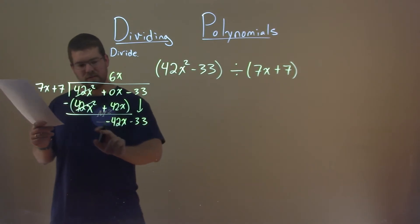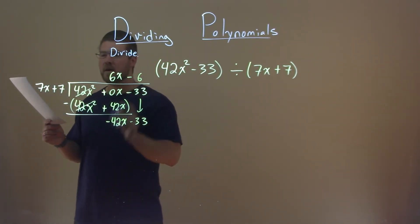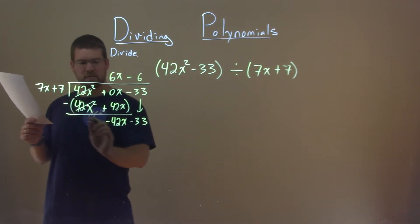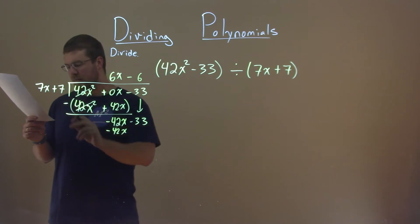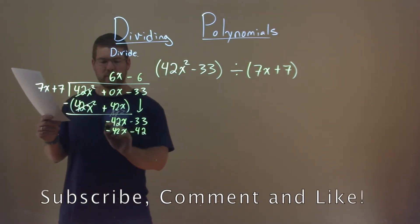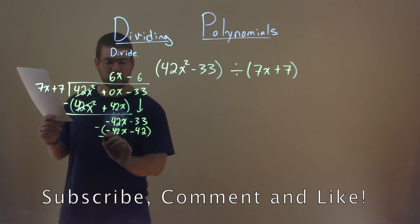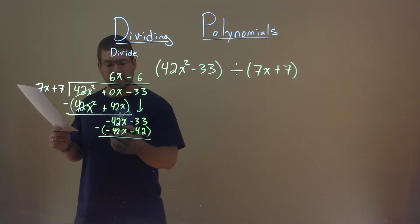What times 7x gets us a negative 42x, and that's a negative 6. Negative 6 times 7x is a negative 42x. Negative 6 times a positive 7 is a negative 42. We're now subtracting all of that from what's above it. Negative 42x minus a negative, like adding a positive, cancels it out. Same thing here.